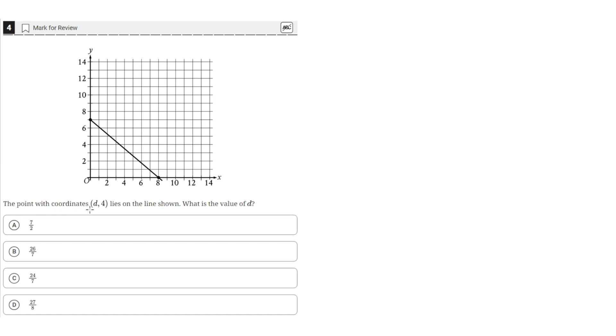The point with coordinates (d, 4) lies on the line shown. What is the value of d?